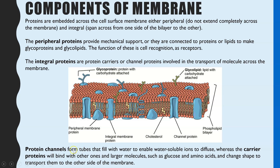Protein channels — a bit more detail: the protein channel tube can fill with water, and that enables water-soluble ions, for example sodium ions, to dissolve and then diffuse through that channel. In contrast, carrier proteins are the ones where larger molecules such as glucose or amino acids bind to the carrier molecule. That binding causes the carrier protein to change shape, and therefore it transports the molecule to the other side.